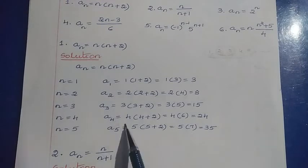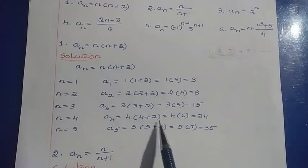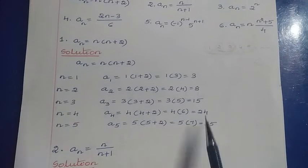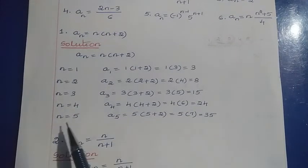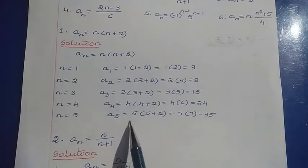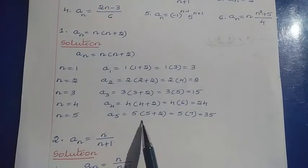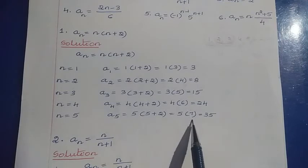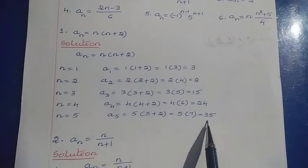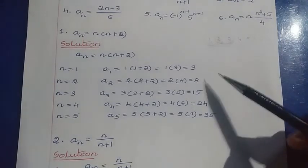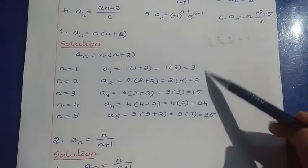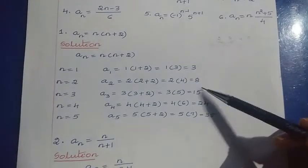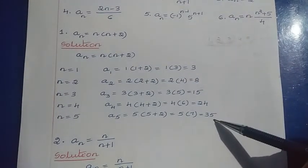For n = 5: a₅ = 5 × (5 + 2) = 5 × 7 = 35. So the first 5 terms of this sequence are 3, 8, 15, 24, and 35.